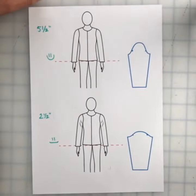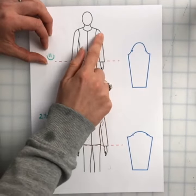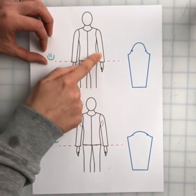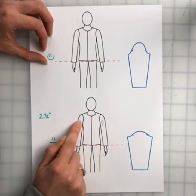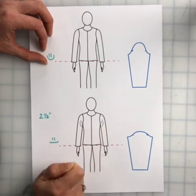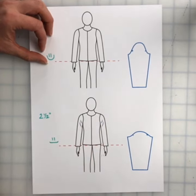So here the taller cap height actually gives us a really nice look when the arms are down, but the lower the cap height is, the more drag lines you get here but you get a better lift.